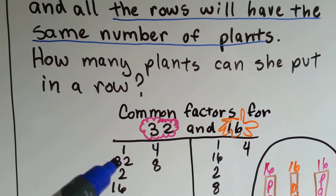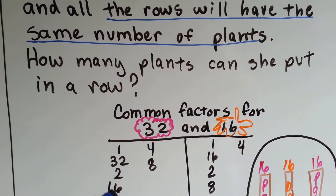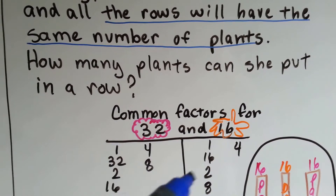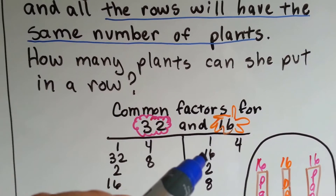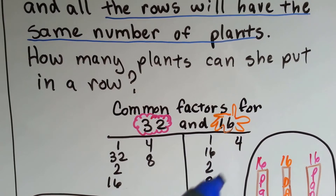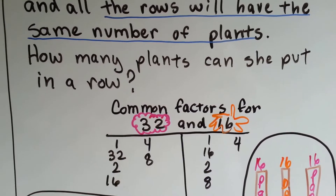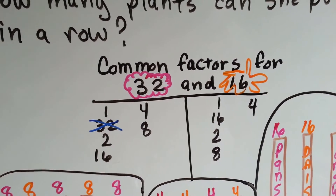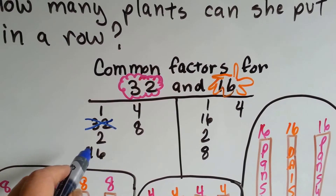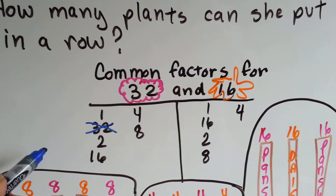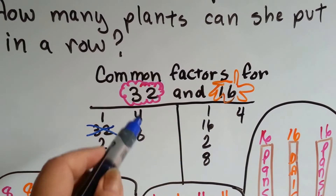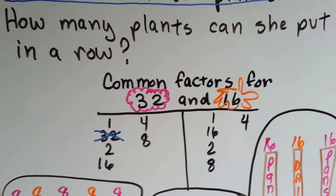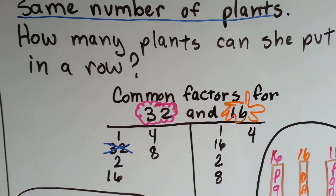Factors of 32 are 1 times 32, 2 times 16, and 4 times 8. Factors of 16 are 1 times 16, 2 times 8, or 4 times 4. What do they have in common? They both have a 1, a 4, a 2, an 8, and a 16. So 32 was the only factor they didn't share.